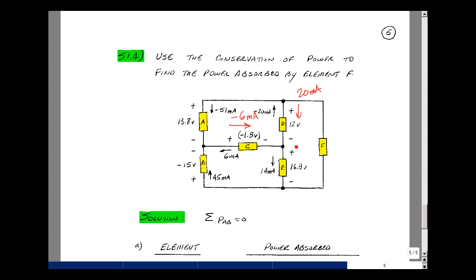And then lastly, the current is entering the plus terminal, leaving the minus for element E. The product of those two would be the power absorbed, which is 16.8 volts times 14 milliamps, and that's 235.2 milliwatts.